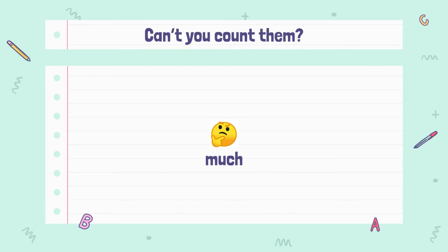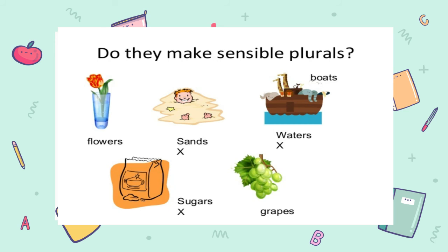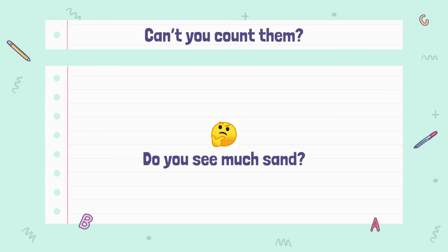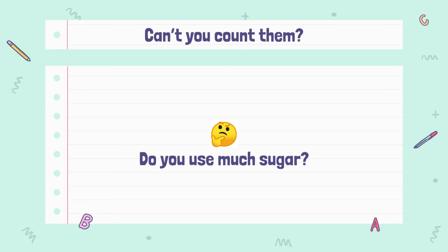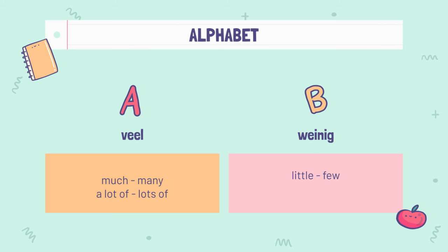If you can't count them and it's a question, again: sand, water, sugar — you use much. Do you see much sand? Do you drink much water? Do you use much sugar? So: 'veel' means much, many, a lot of, or lots of.